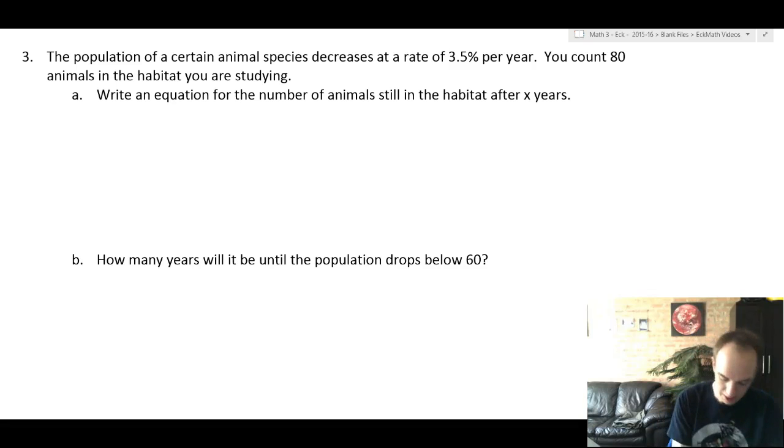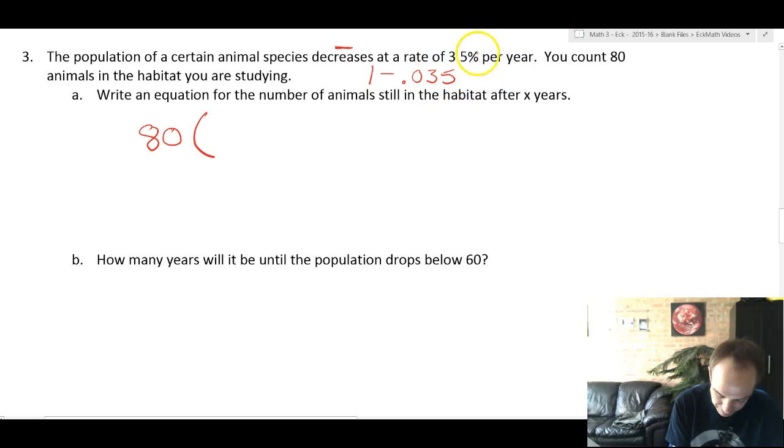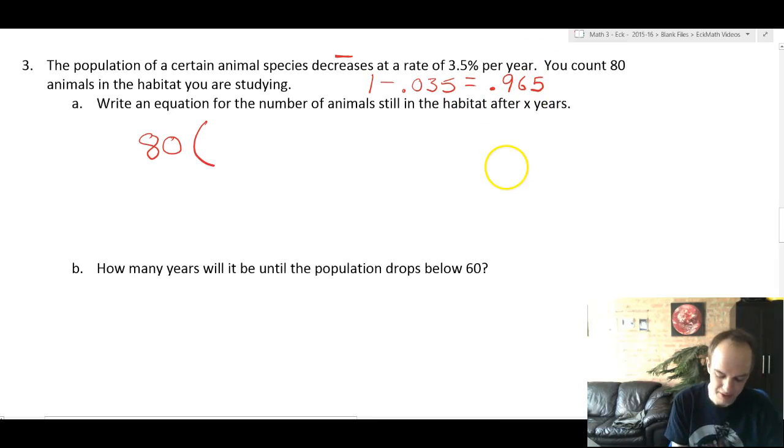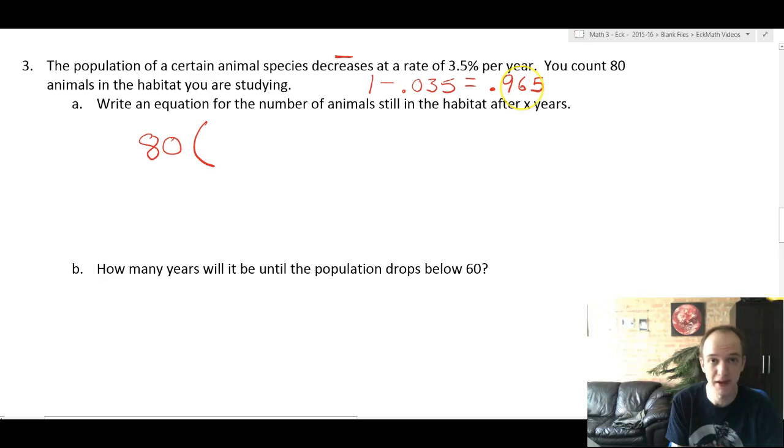Number three, there are 80 animals in a habitat. So the base is 80. And the population is decreasing. So I'm going to do 1 minus 0.035, which will give me 0.965. Another way to think about this is that there's 96.5% of the animals remaining every year. So it is 80 times 0.965 to the x.